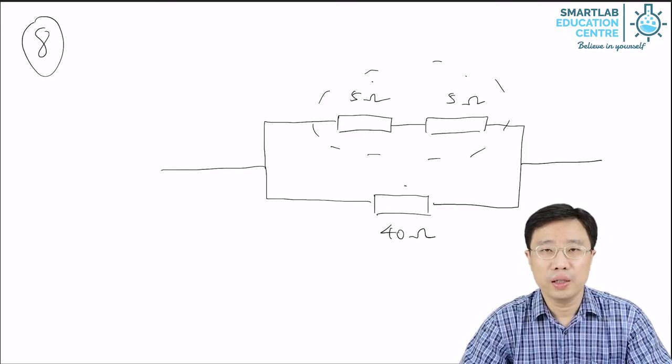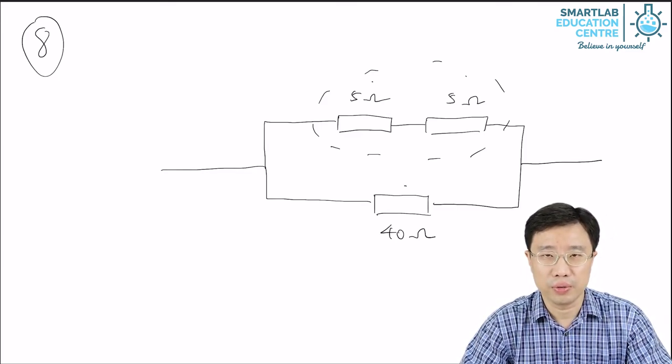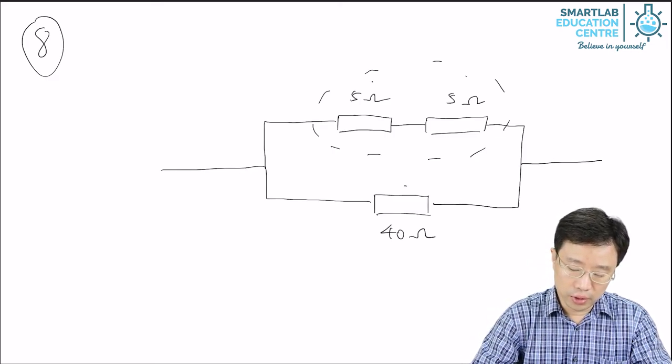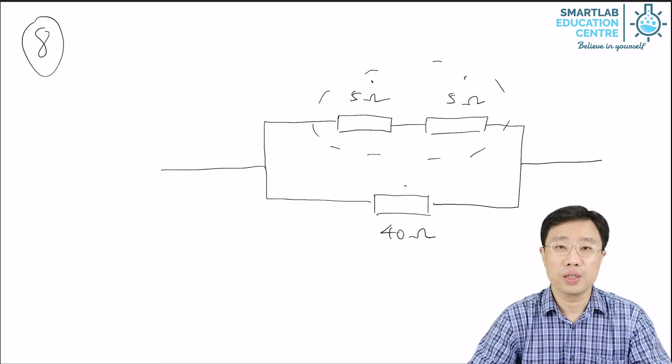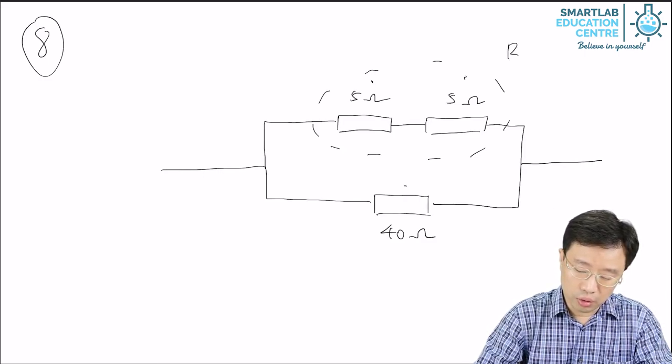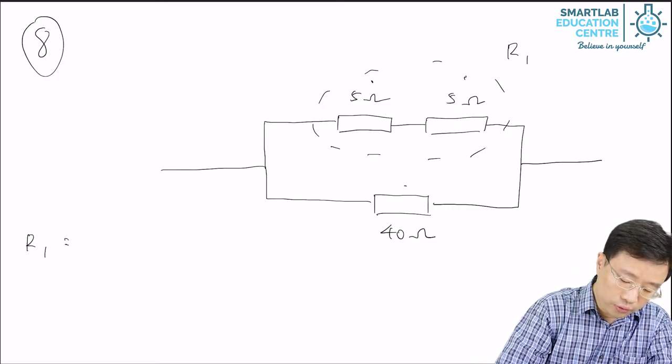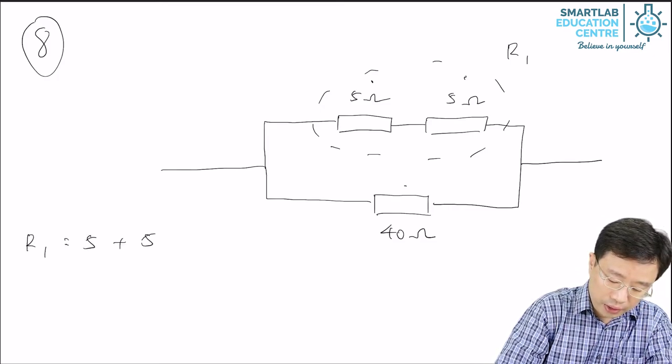So how do we find the effective resistance of this arrangement? First, we deal with the two resistors in series. We call this resistance R1. So R1 is equal to 5 plus 5 equals 10 ohms.